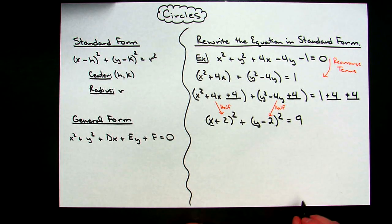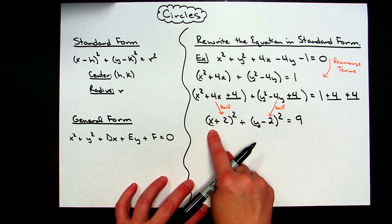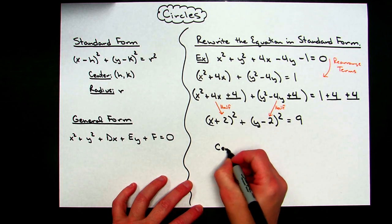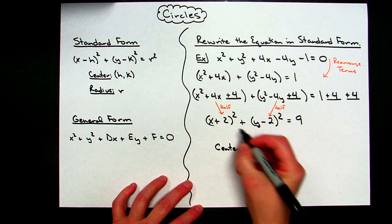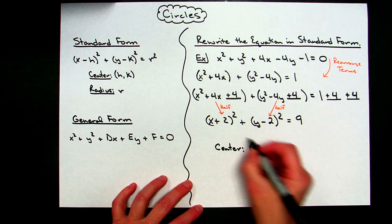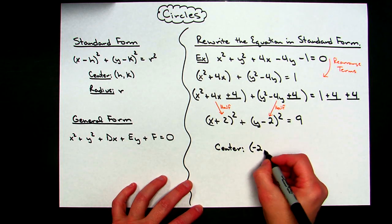So I've rewritten this equation in standard form. And from this, now I can easily see that my center is located at, when you pull this out, you've got to remember to do the opposite. So it's going to be negative 2 from here and 2 from here.